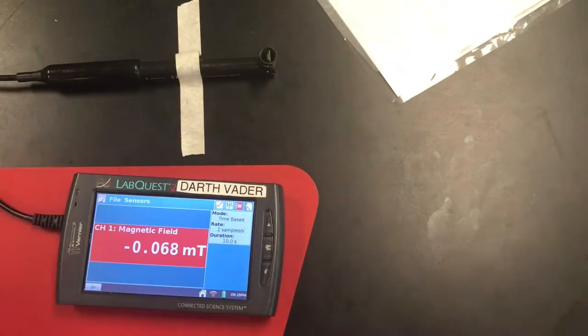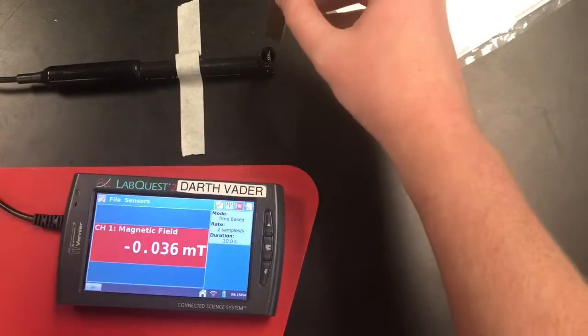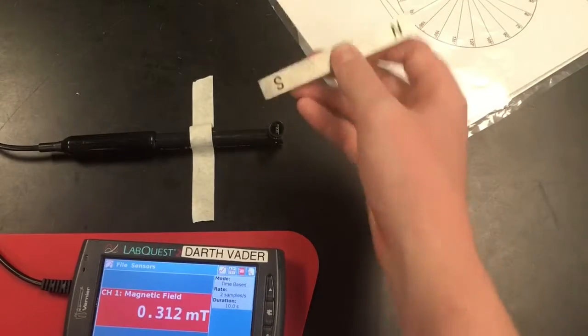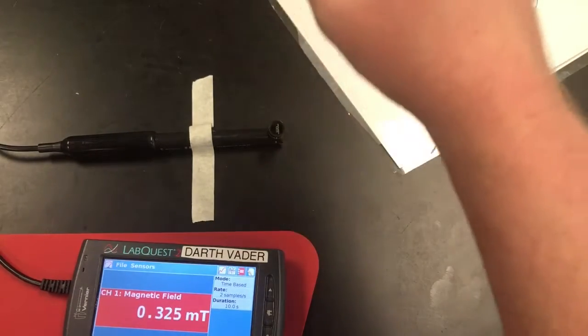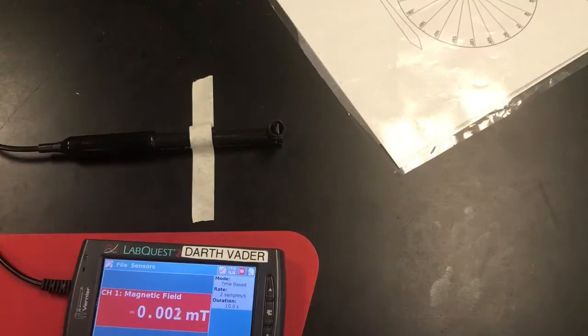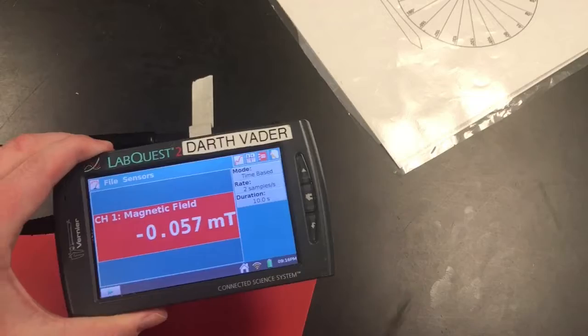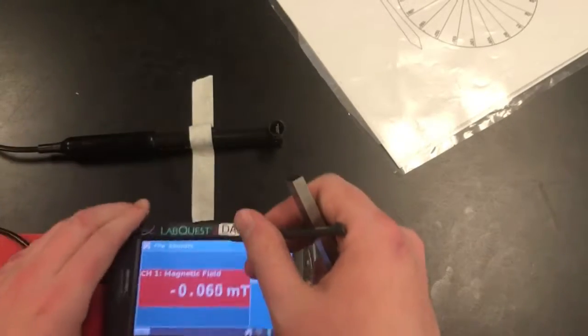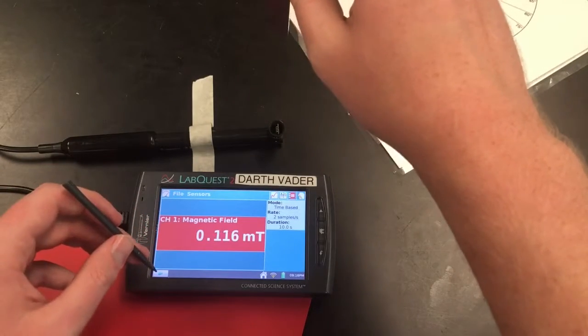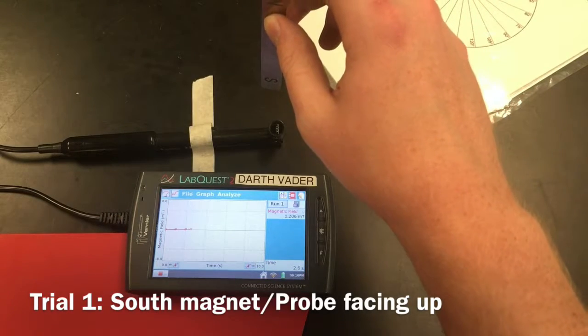For this part, we're going to take a bar magnet and what I'm going to do here is take the south end of the bar magnet and move it down for about five seconds and then move it up for the remaining five seconds. I'm going to get my LabQuest ready and I'll hit play, move it down, and back up like that.